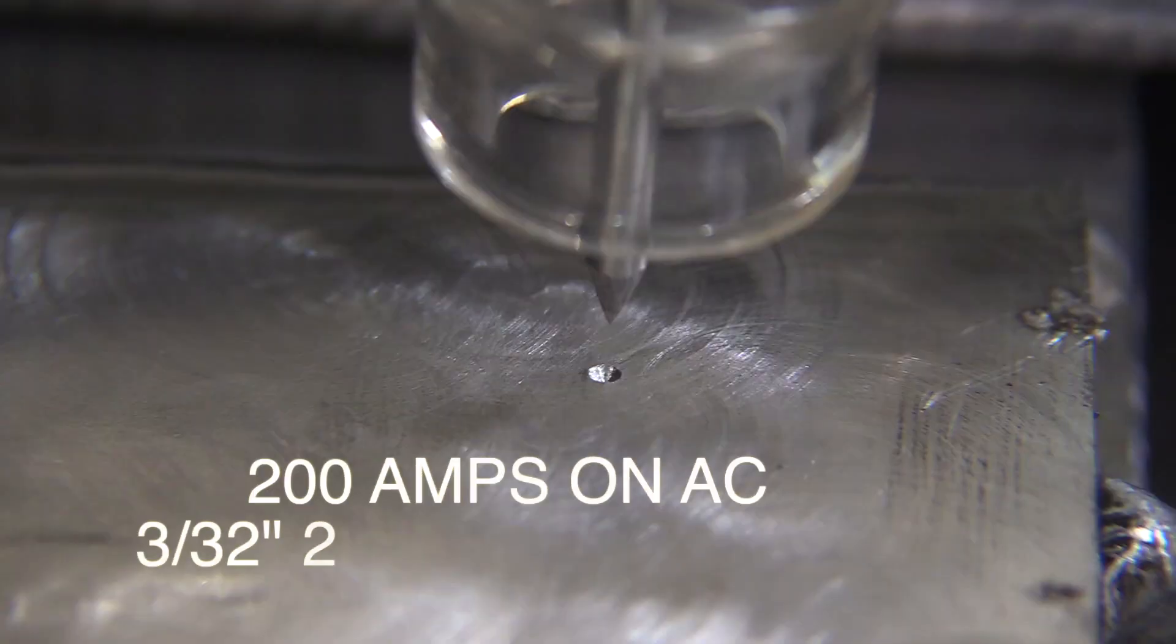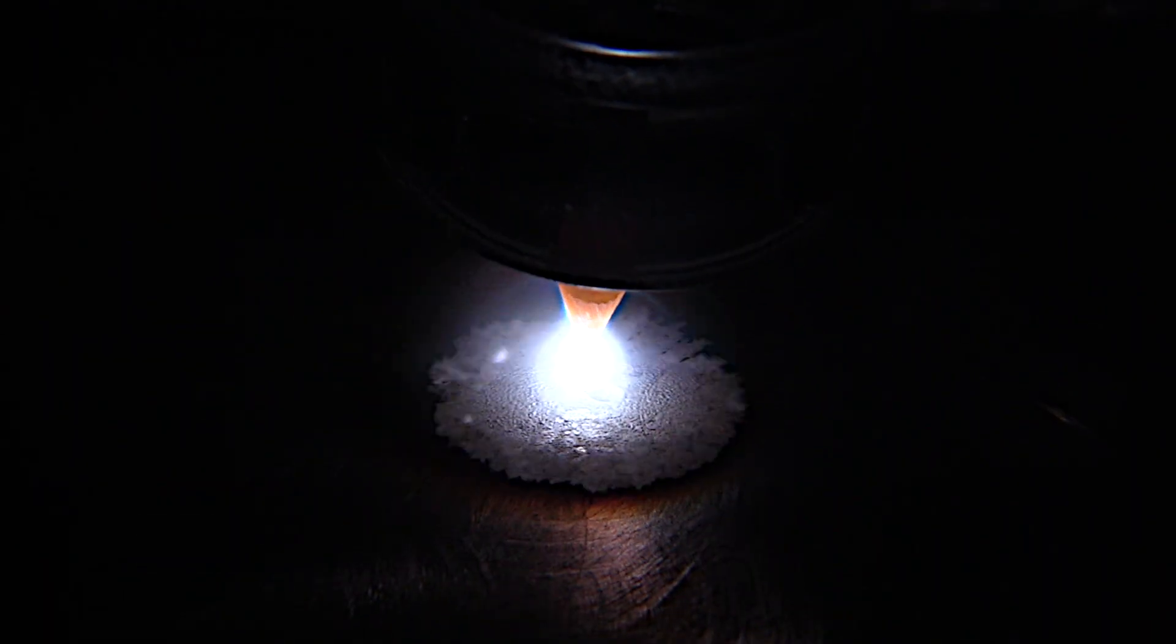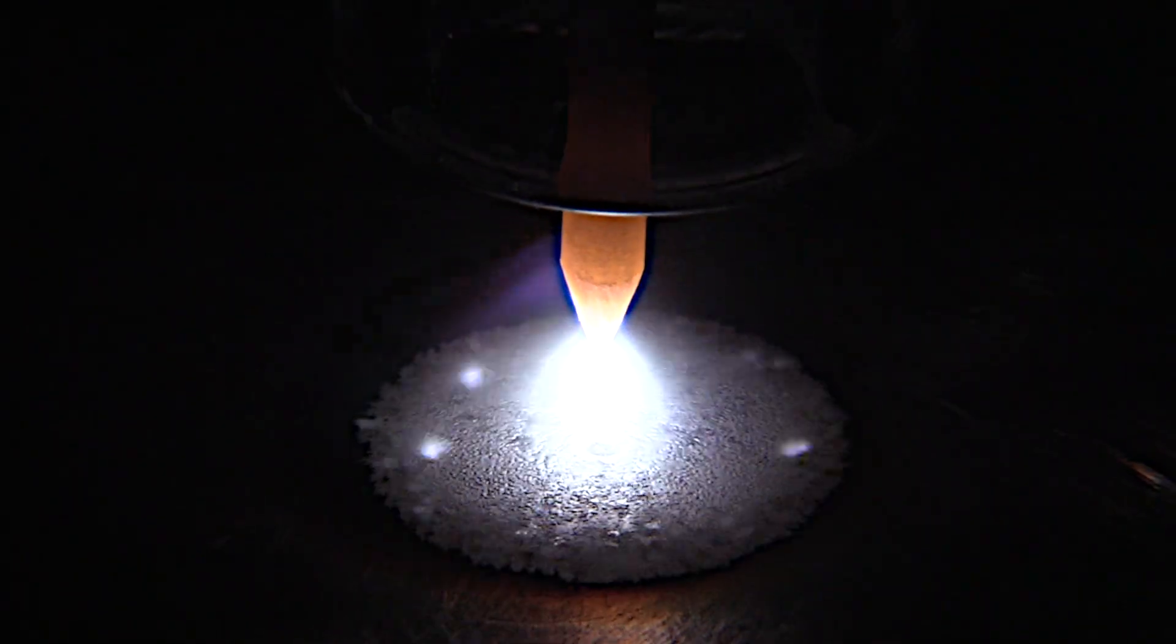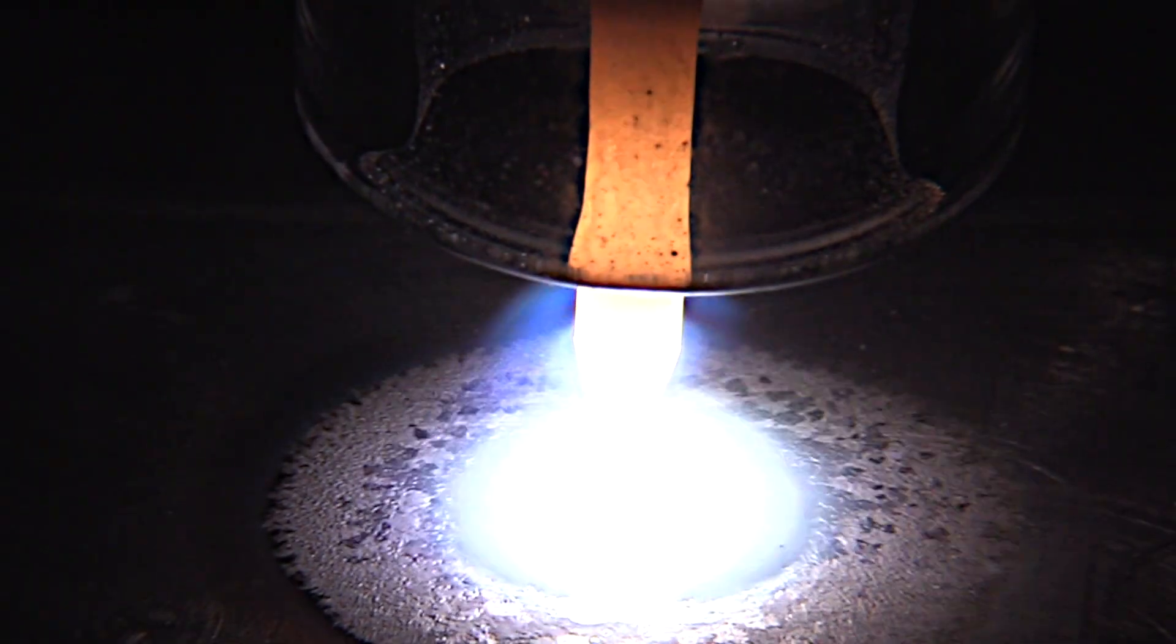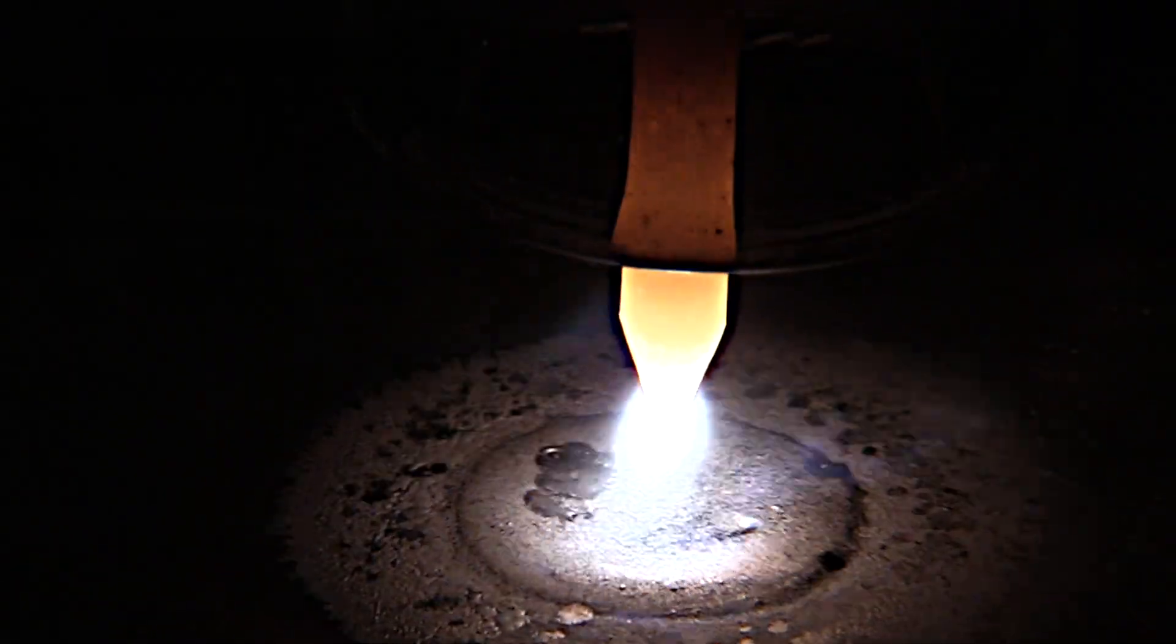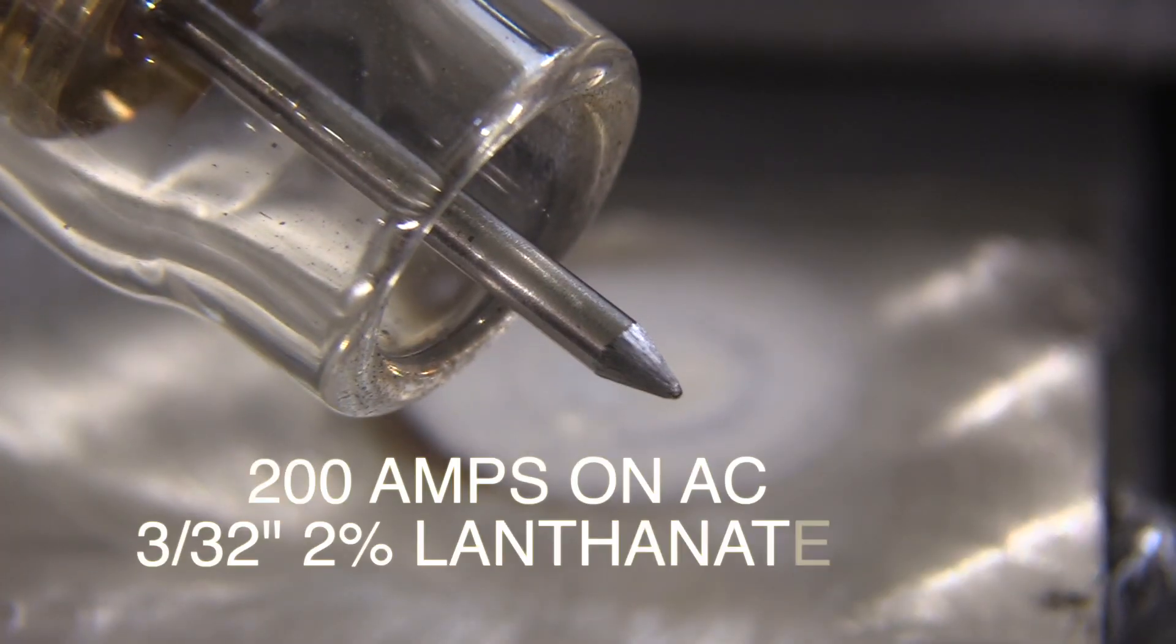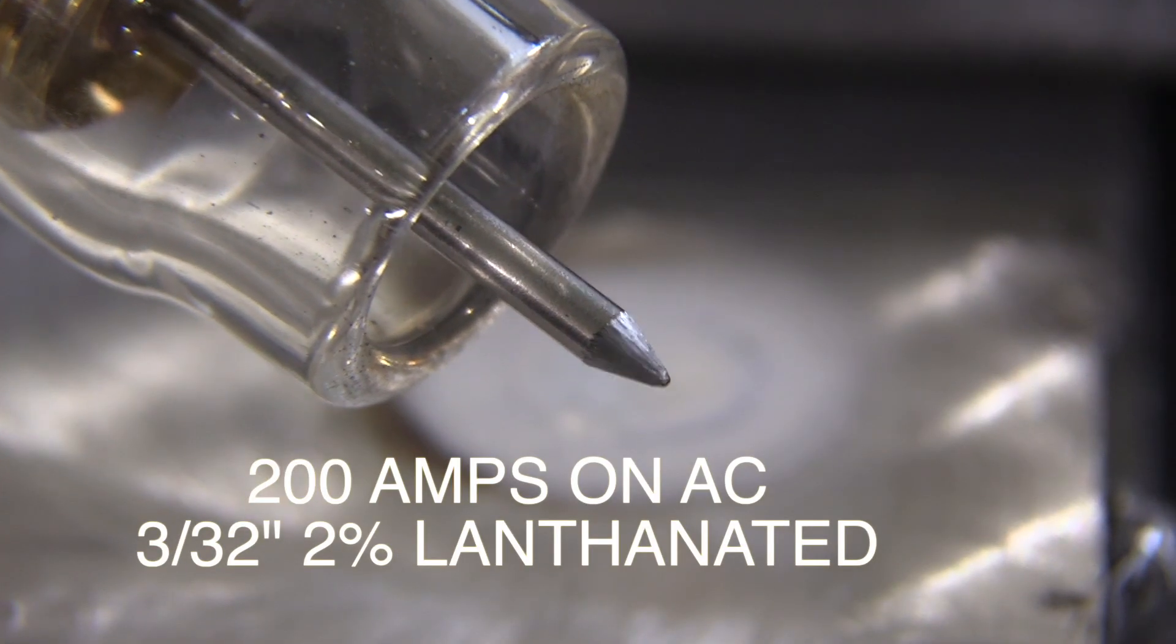Okay we're set on AC with a 332 2% lanthanated electrode. There's the arc start nice and crisp. Let's ramp it up to 200 amps and let's see how much it rounded that tip. This is one of the reasons that I really like 2% lanthanated because it holds up well under high amperage.